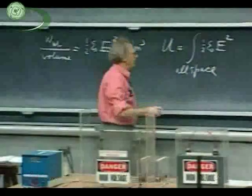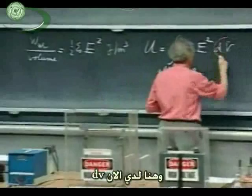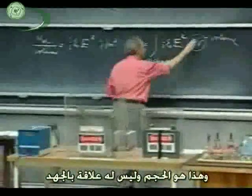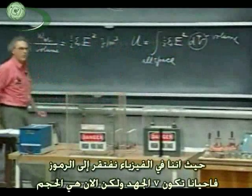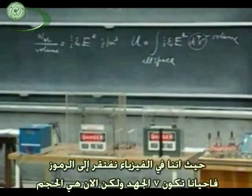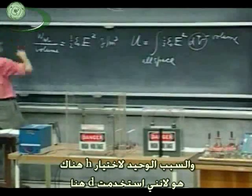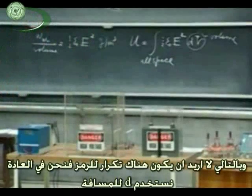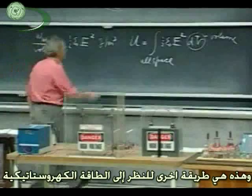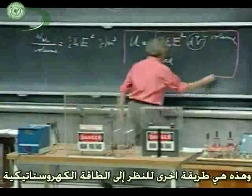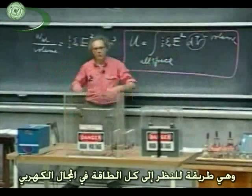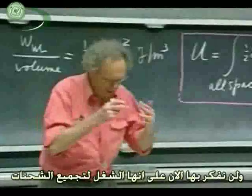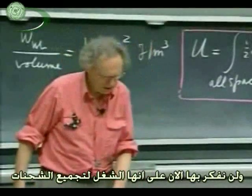If necessary, you have to integrate all the way to infinity, and here I have dV — this is volume. This has nothing to do with potential; in physics we often run out of symbols. V is sometimes potential; in this case it is volume. The reason I chose H for the separation is I already have a d here, so I didn't want two d's. Normally we take d as the separation between plates. So this is another way of looking at electrostatic potential energy — we look at it now only from the point of view of all the energy being in the electric field, and no longer think of it as the work done to assemble the charges.